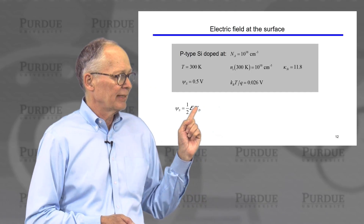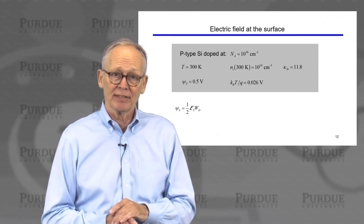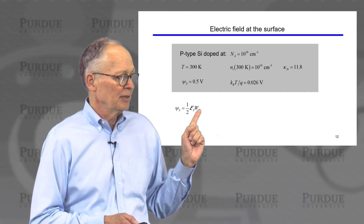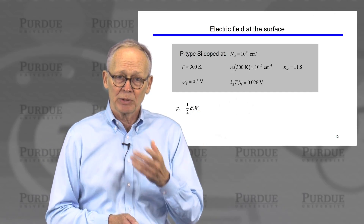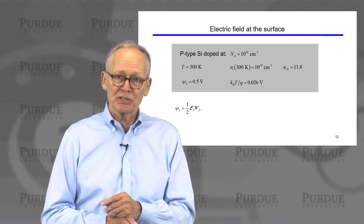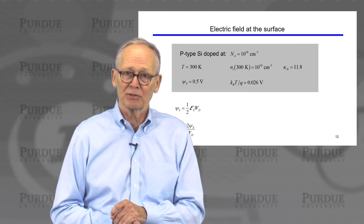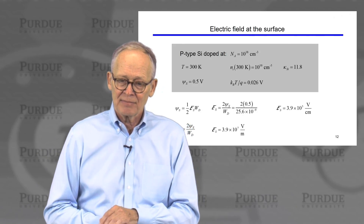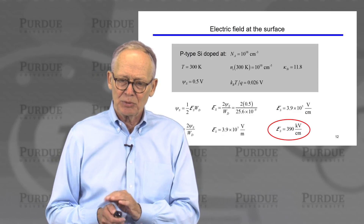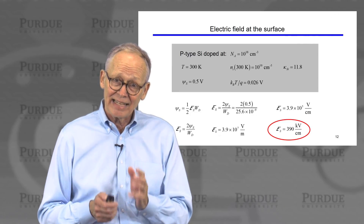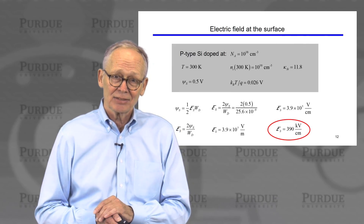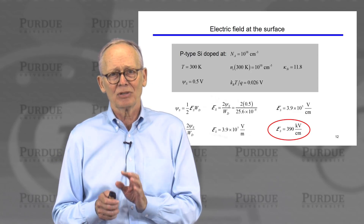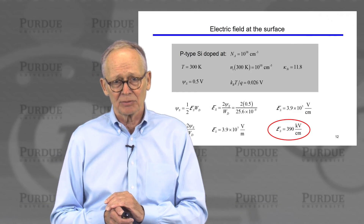For the electric field: the surface potential equals the area under the electric field versus position curve, giving a simple expression between the surface electric field, the depletion width, and the surface potential. Given the surface potential and the computed depletion depth, we can solve for the surface electric field. Plugging in numbers gives approximately 390 kilovolts per centimeter — a very strong electric field. Even though we've only bent the bands by half a volt, the band bending occurs over such a small distance that these are very large electric fields.